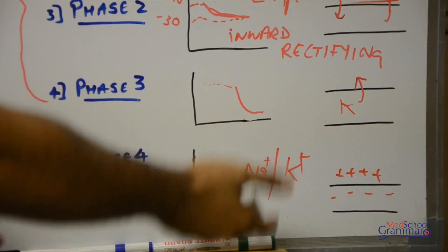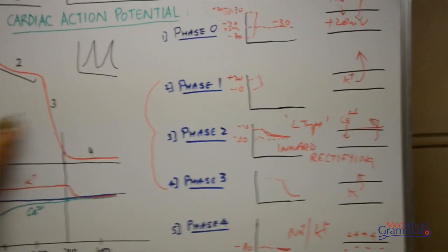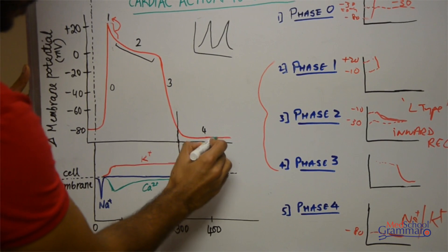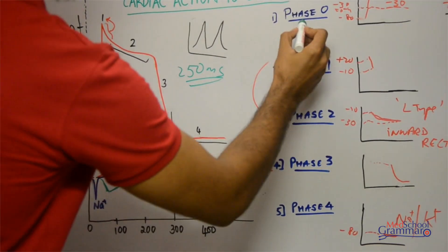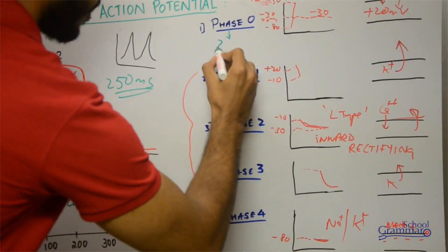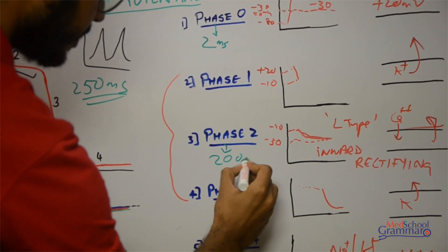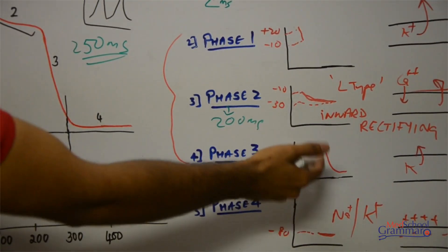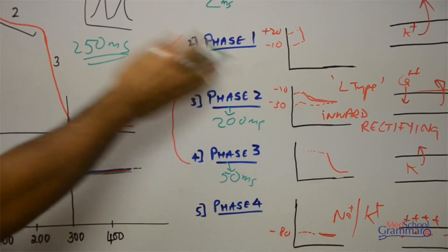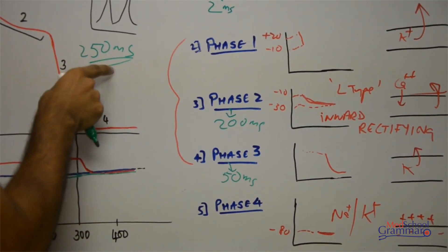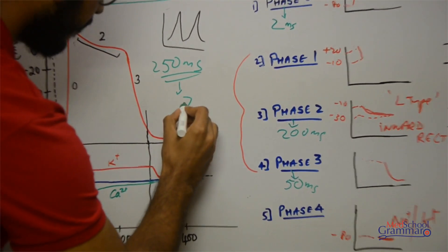These are the five phases of the cardiac action potential. The total duration of one cardiac action potential is about 250 milliseconds. Phase 0 or initial depolarization lasts about 2 milliseconds, phase 2 or the plateau phase lasts about 200 milliseconds, and phase 3 or the repolarization phase lasts about 50 milliseconds. This duration of approximately 250 milliseconds applies when heart rate is in the normal range of about 75 beats per minute.